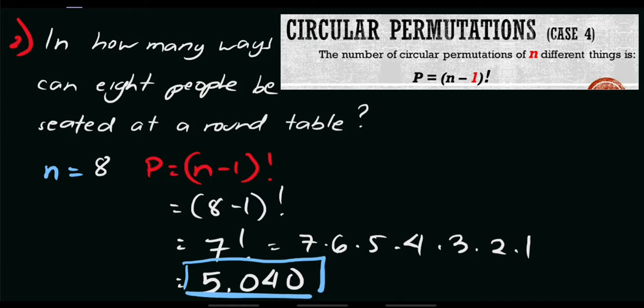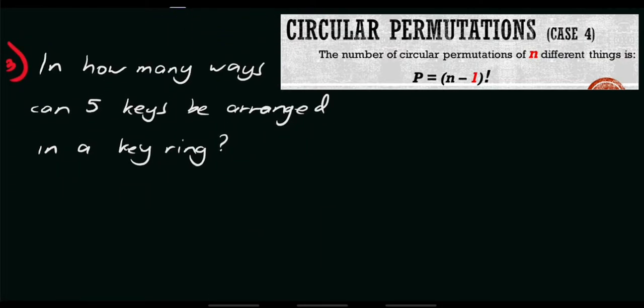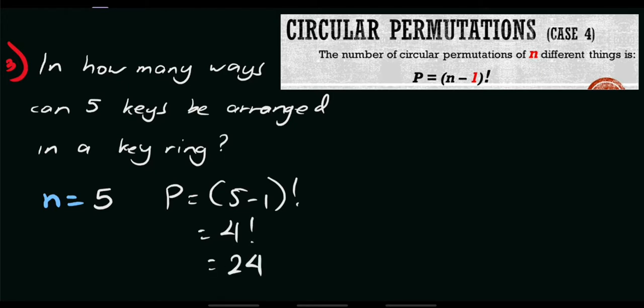So again, if the counterclockwise and clockwise orders can be distinguished, then we will use this given formula, when it's distinguished. Now, let's try to answer problem number 3. In how many ways can 5 keys be arranged in a key ring? This is actually our second concept. So, again, if you want to use the previous concept, which is circular permutations where we use distinguishable, your first step is to determine the value of N. We have 5 keys. N equals 5.